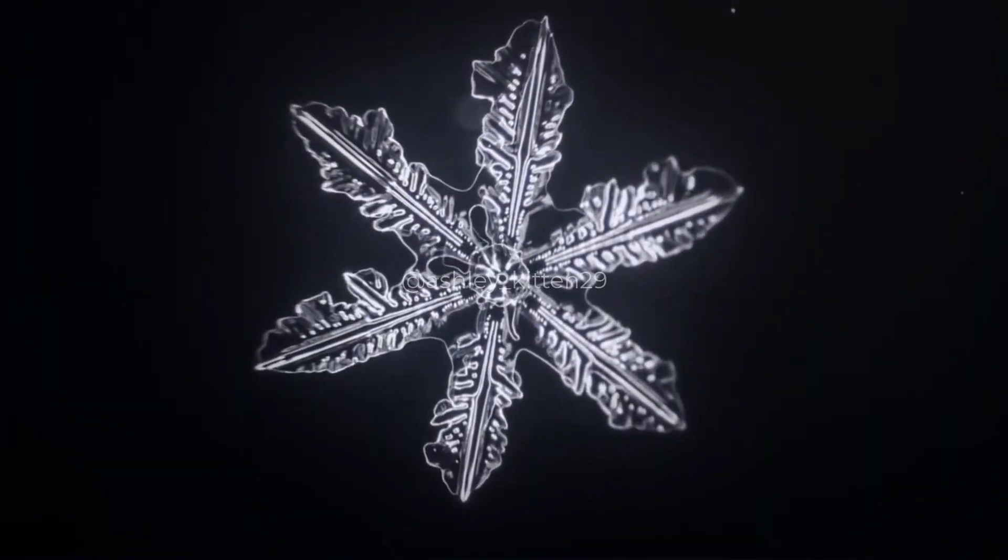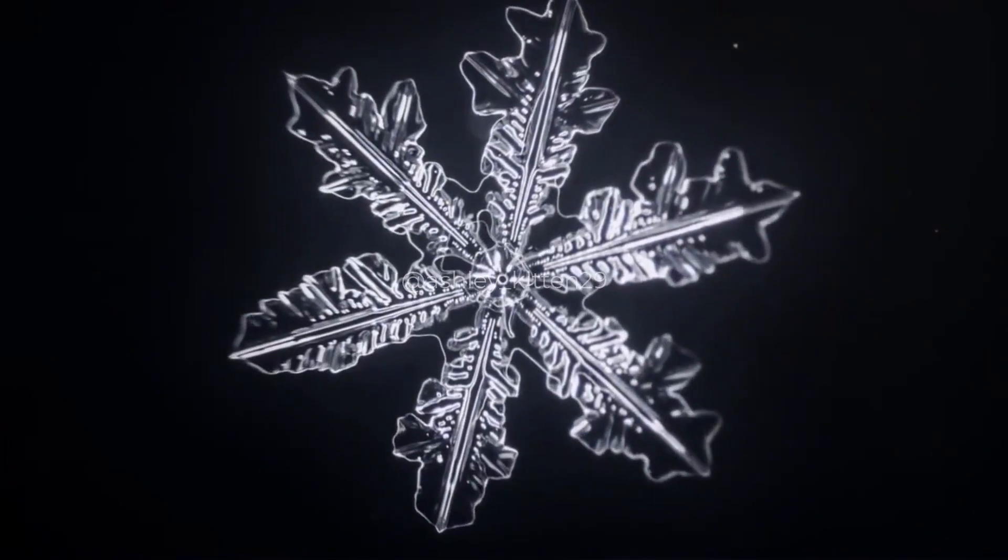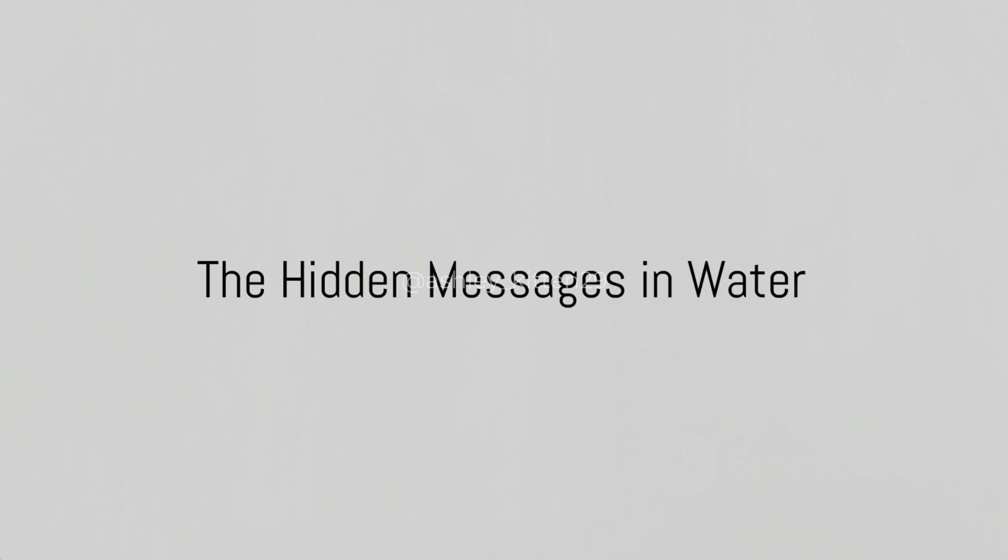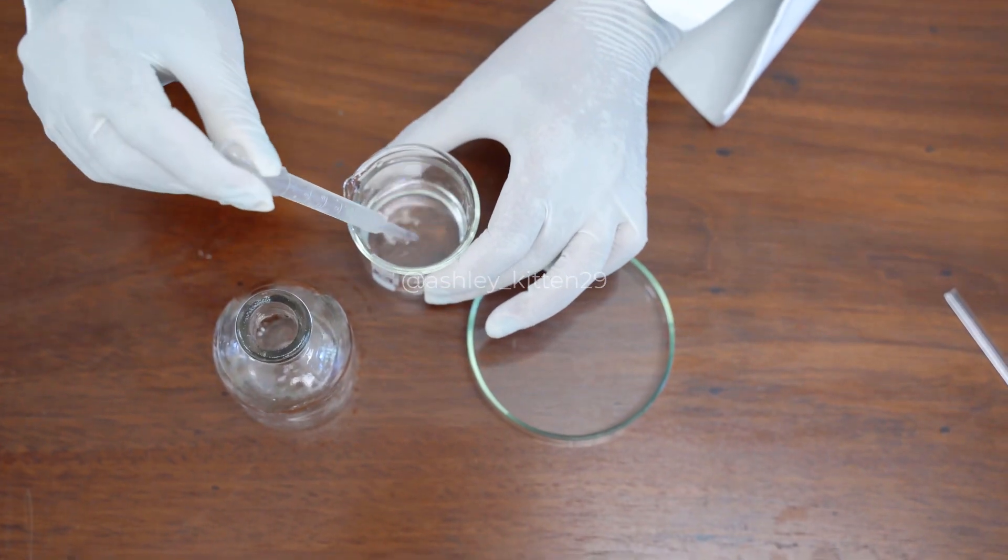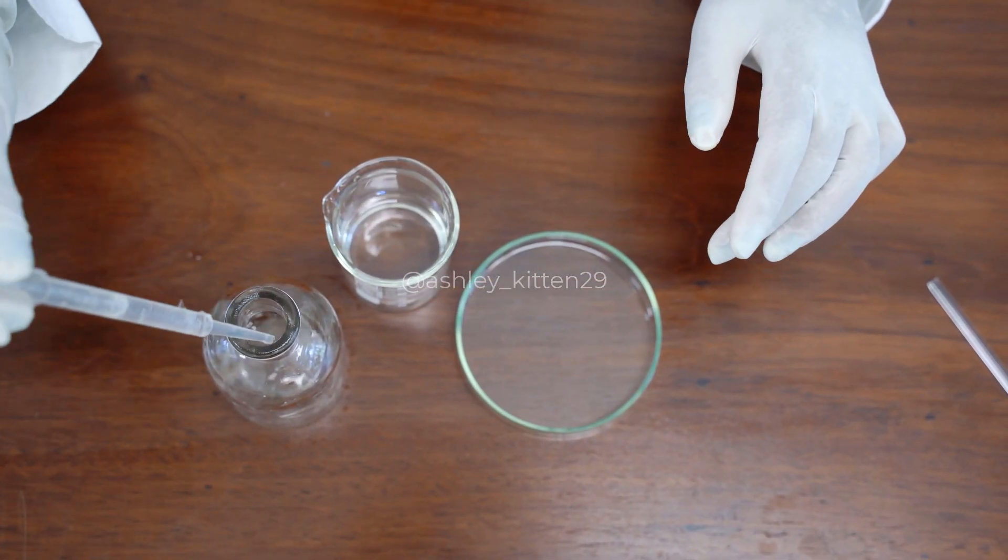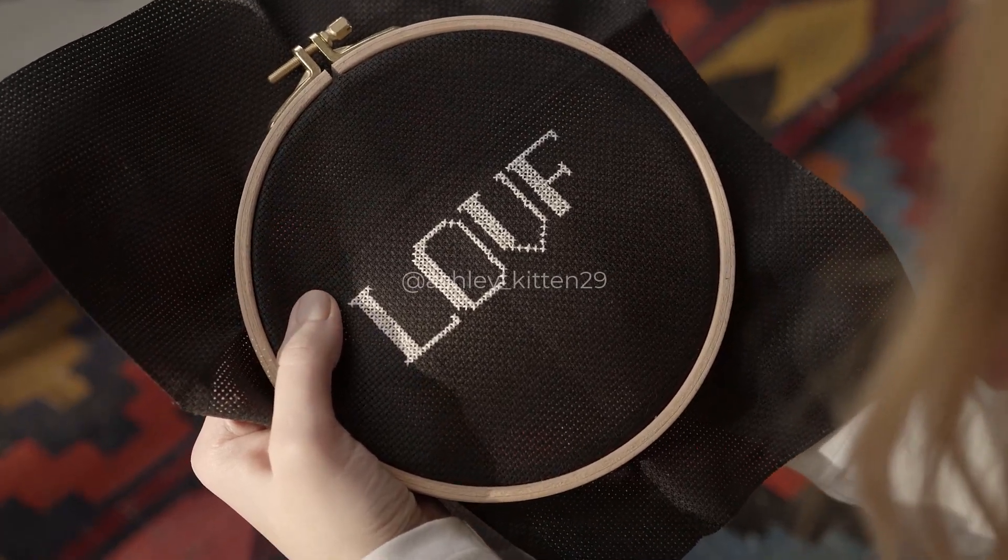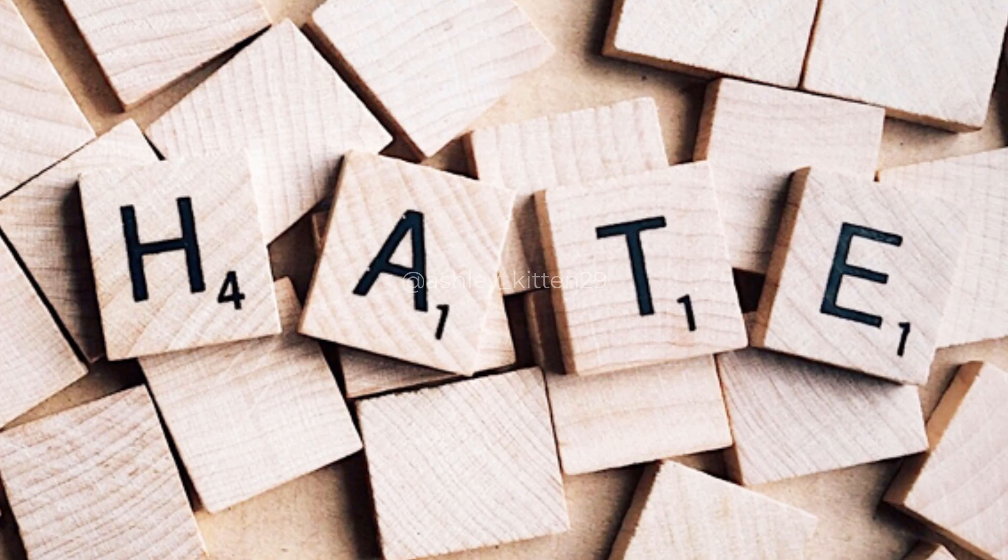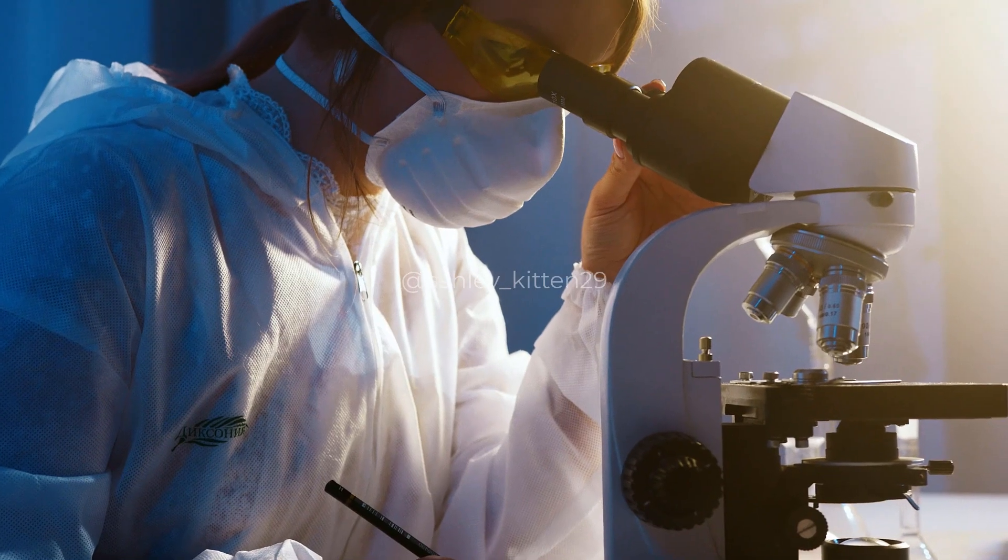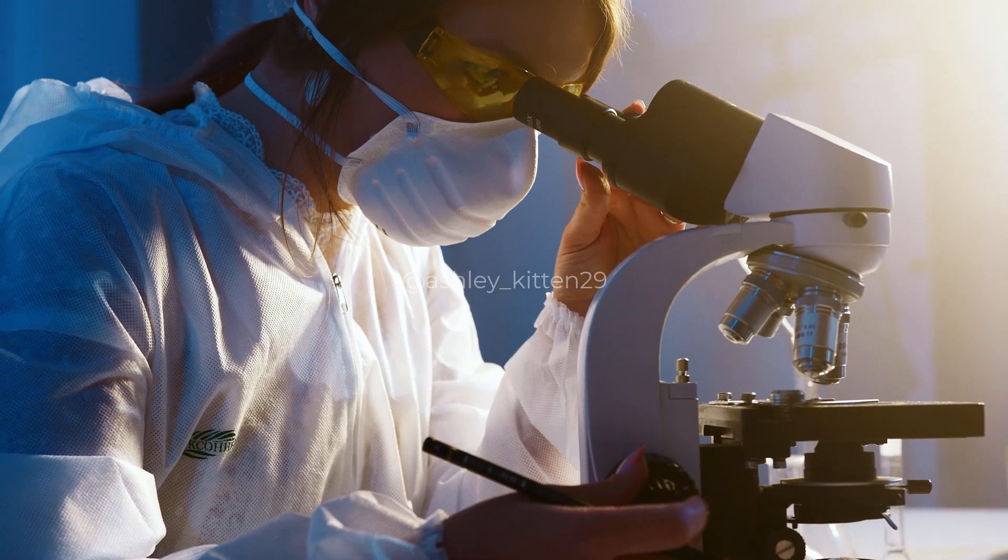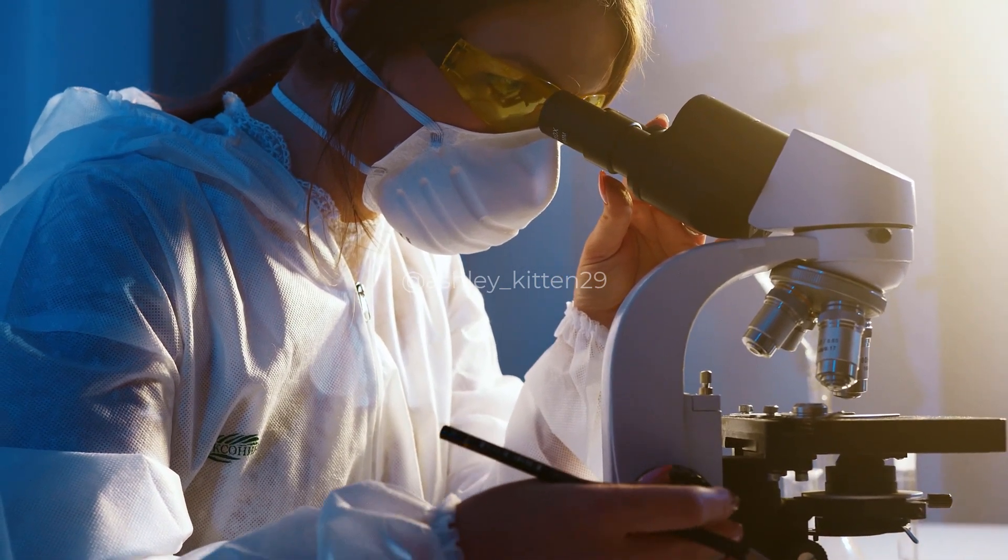His results were intriguing, but Emoto was just getting started. Emoto's most renowned work came in the form of his study titled The Hidden Messages in Water. This groundbreaking experiment began by placing water in vials labeled with positive phrases such as love and gratitude, or negative words like hatred and anger. The water was then frozen, and the resulting ice crystals were observed under a microscope.